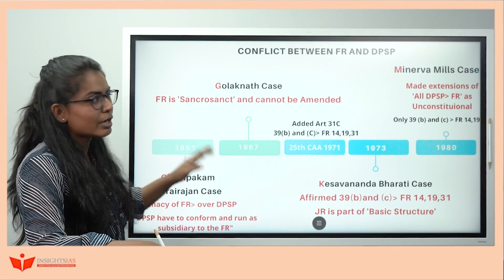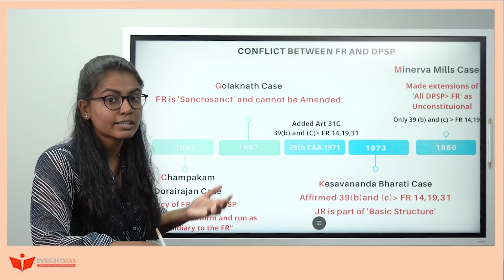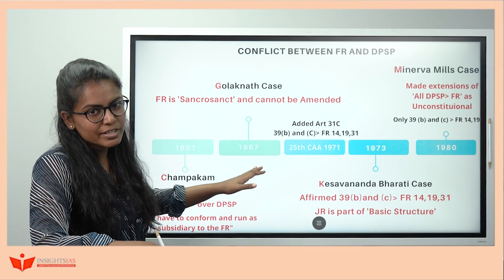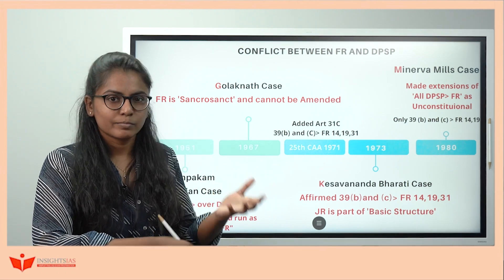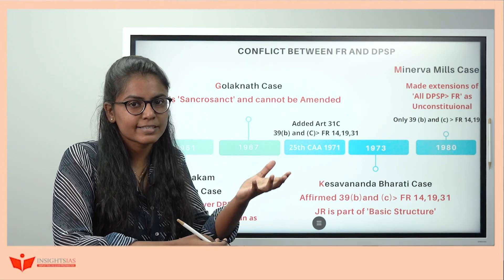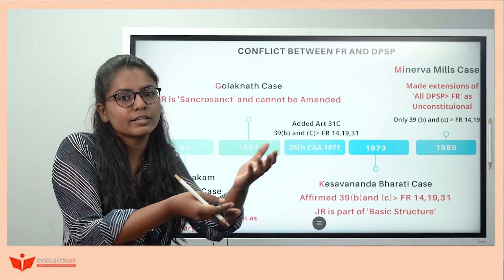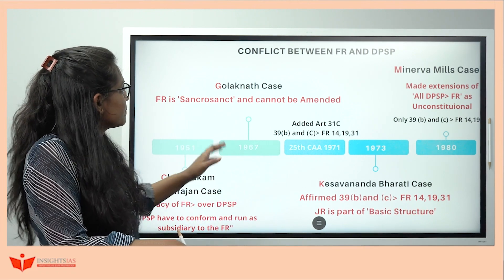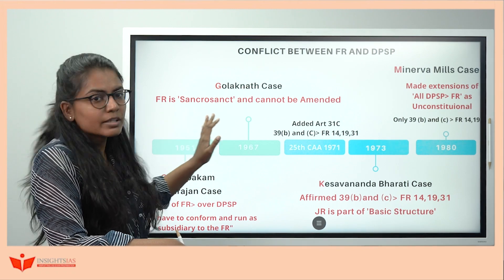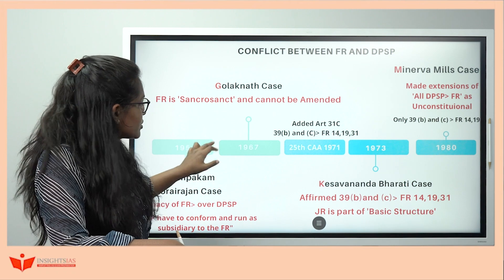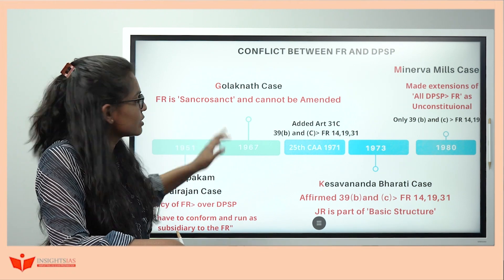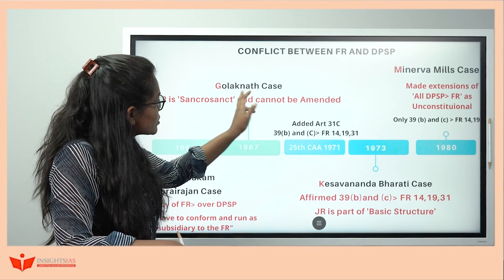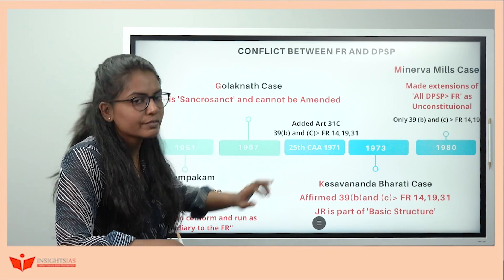To counter the Champakam judgment, the government came up with the 4th and 17th Constitutional Amendment Acts. Then judiciary countered with the Golaknath case — this was a tussle between judiciary and legislature. In Golaknath, the court held that Fundamental Rights are sacrosanct and cannot be amended, countering the government's constitutional amendments.